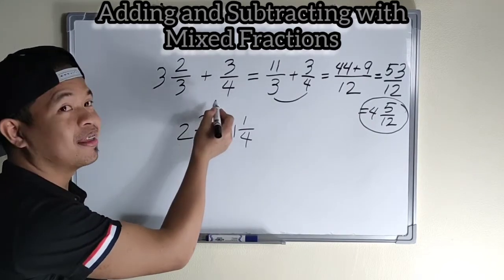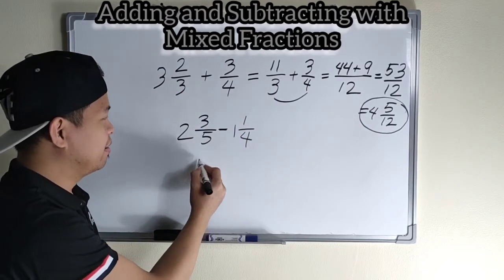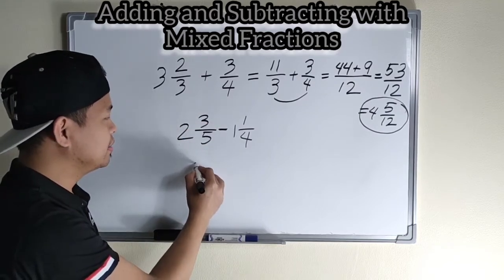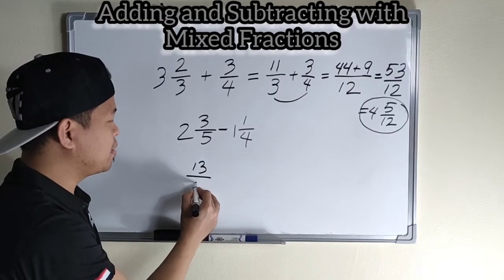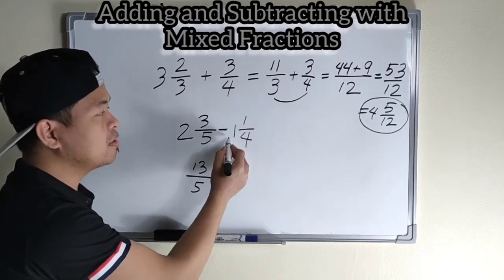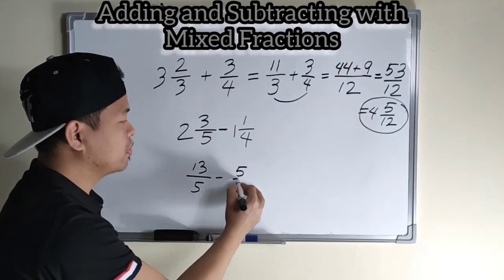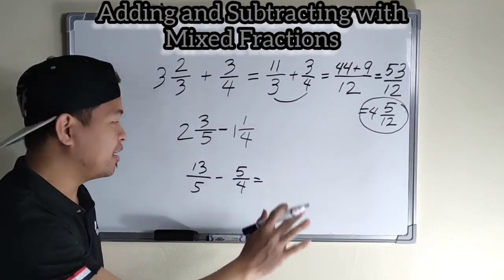Change sa improper fraction. Multiply. Then, add. Clockwise pa rin. Simula naman sya sa baba. Five times two is ten plus three is thirteen over five. Copy lang yung denominator minus four times one plus one is five over four. We can proceed na sa next step natin.